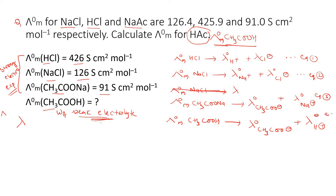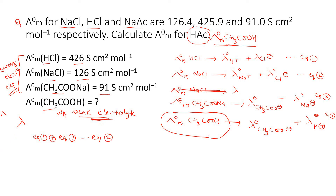Equation 4 gives us λ°ₘ(CH₃COOH). Now I want to calculate this. To do so, I take equation 1 plus equation 3, minus equation 2. CH₃COO⁻ is in equation 3, H⁺ is in equation 1, and Na⁺ and Cl⁻ (from equation 2) are not needed, so we subtract equation 2. Add what you need and remove what is not required.